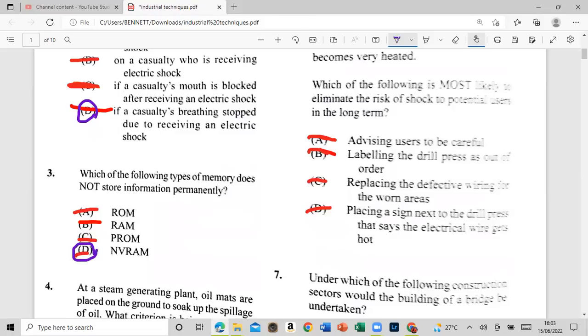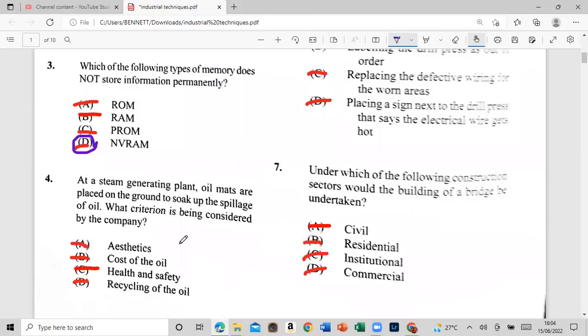That's T number four. At a steam generating oil mats are present long to soak up spillage of oil. What creation has been considered going to come to this case? Because of oil, health and safety are recycling oil. And that is health and it's safe.